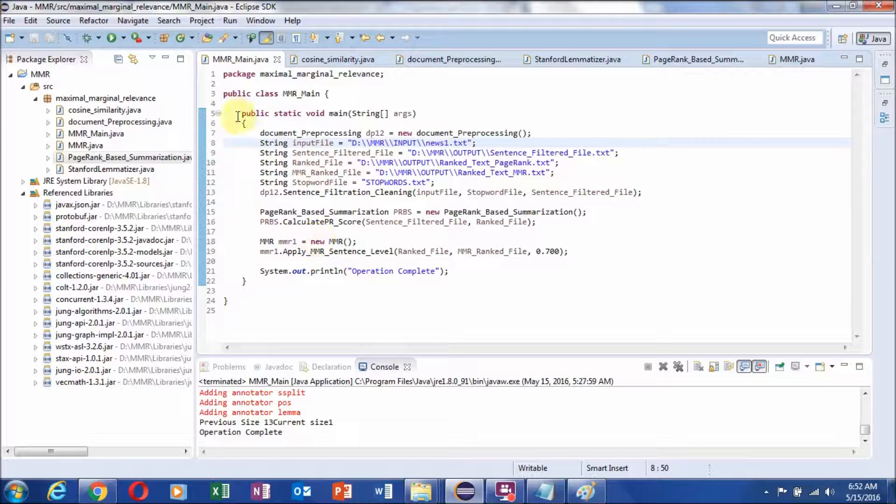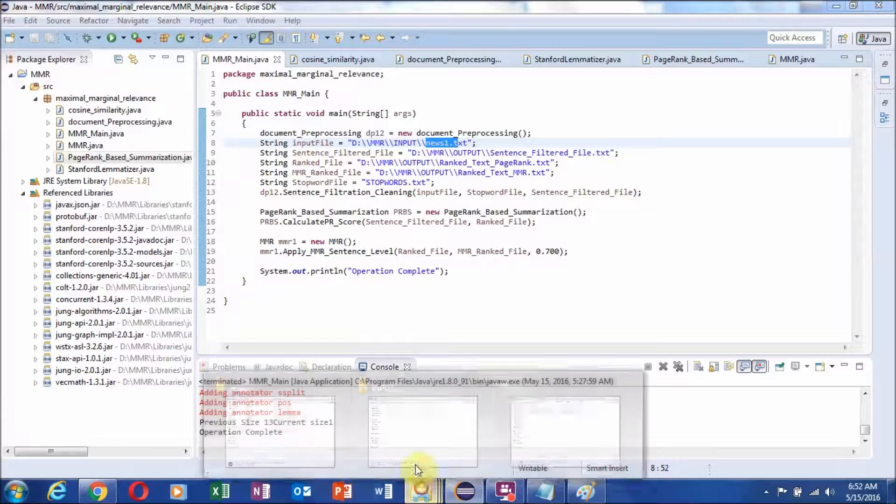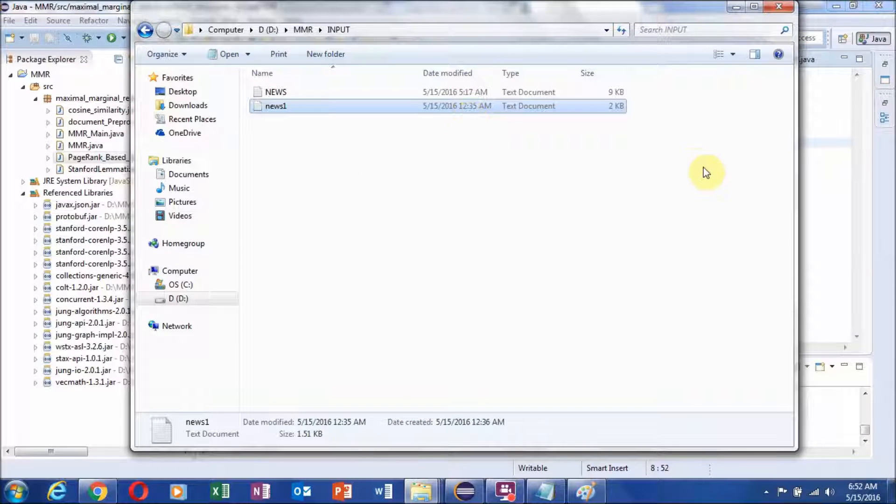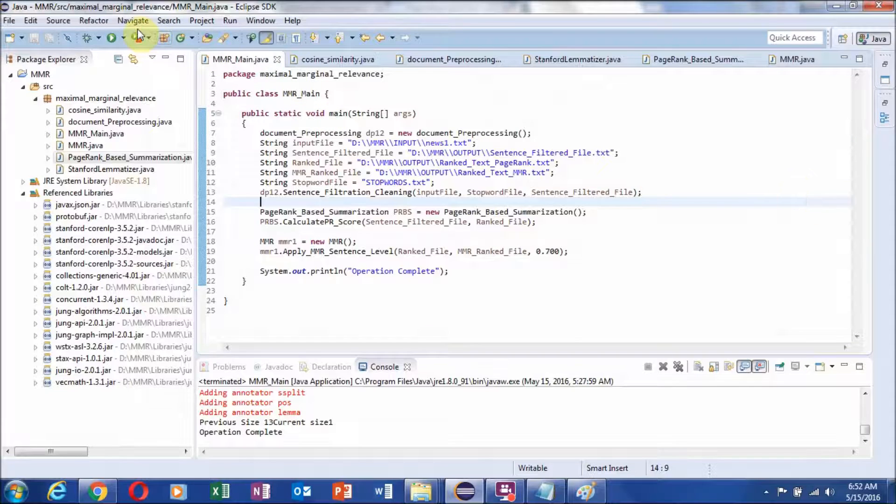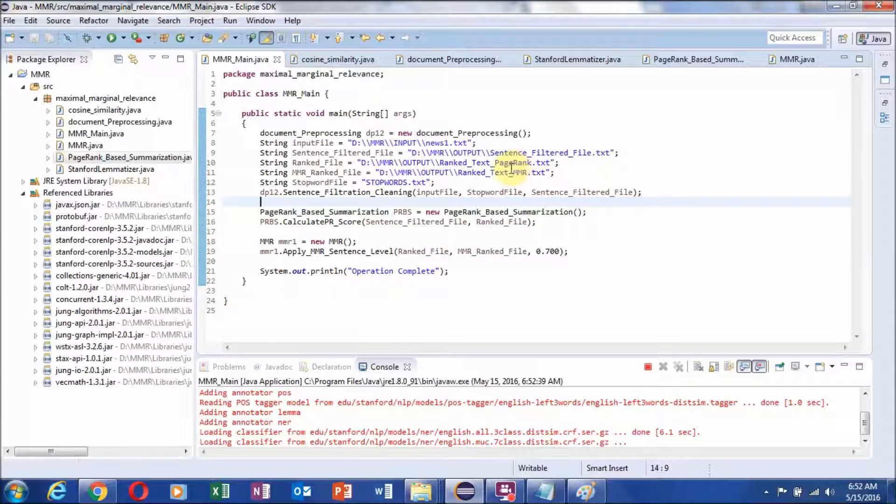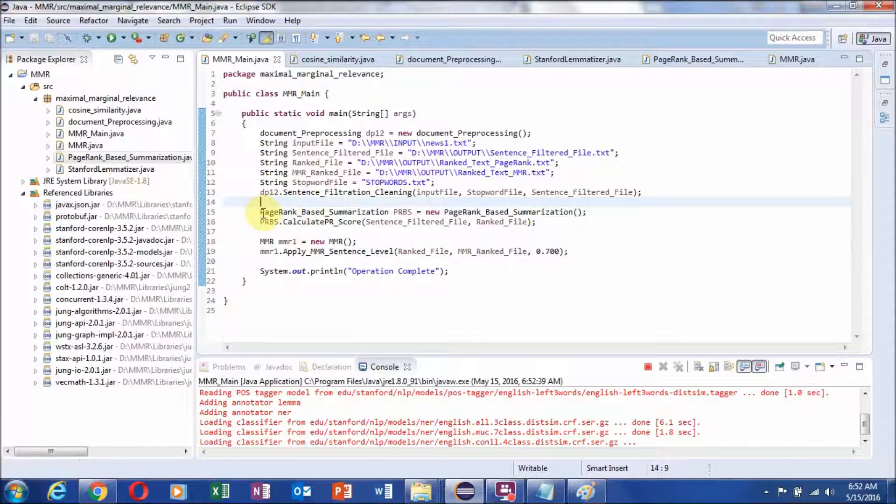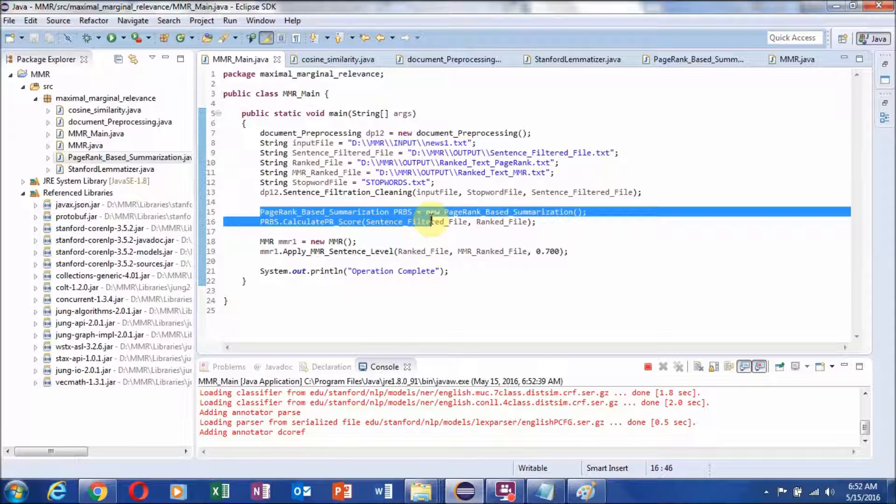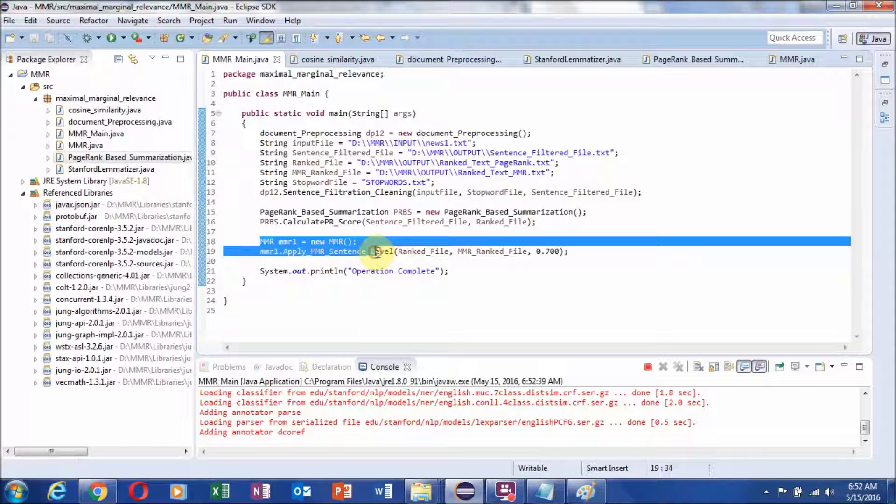So when I run this system for the file that I discussed here, it will give the output and the output will contain two different types of ranked list of sentences. The first ranking will be based on only PageRank and the second ranking will be based on PageRank and maximum marginal relevance.